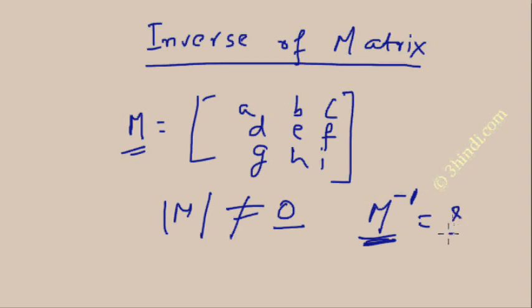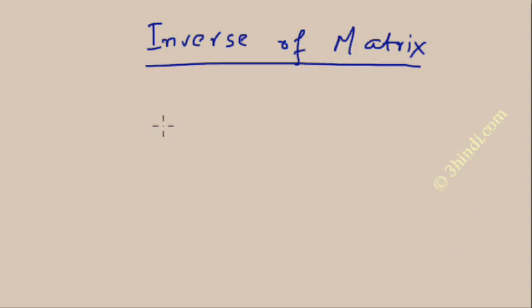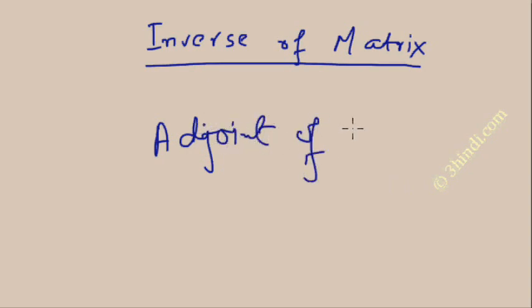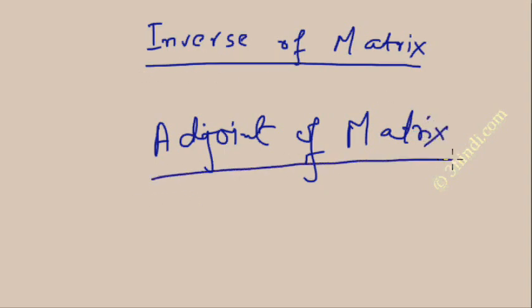How do you calculate the inverse of a matrix? To calculate the inverse, you first need to know what the adjoint of a matrix is. To find the inverse, you need to first find out the adjoint of that matrix, and then only you can find the inverse.